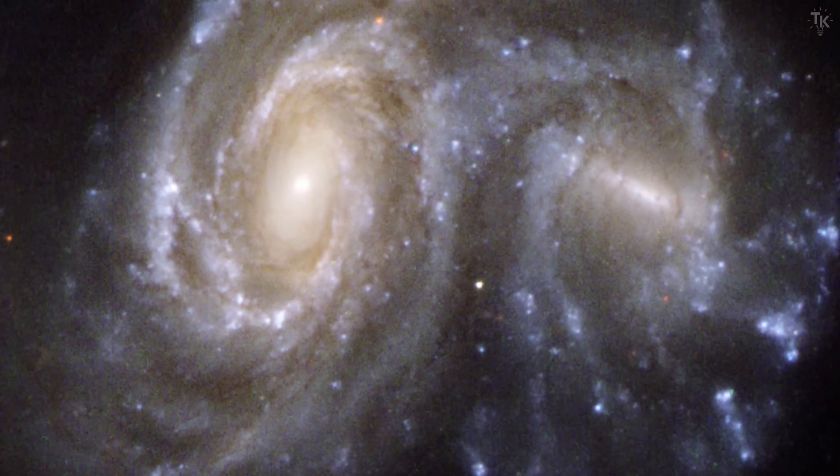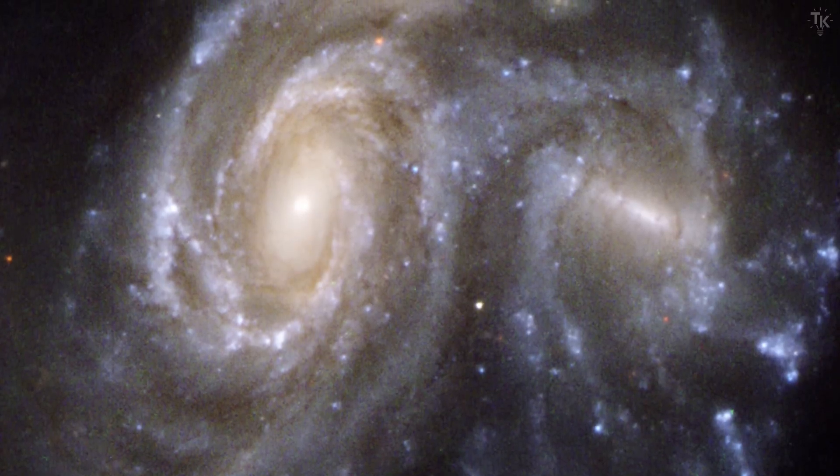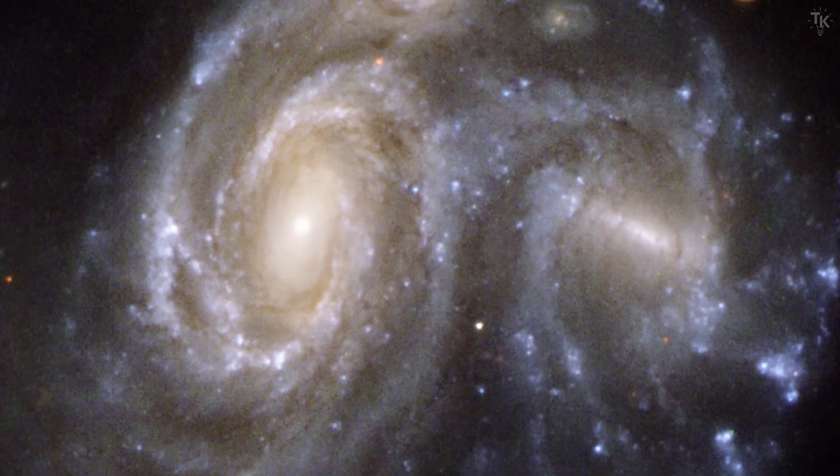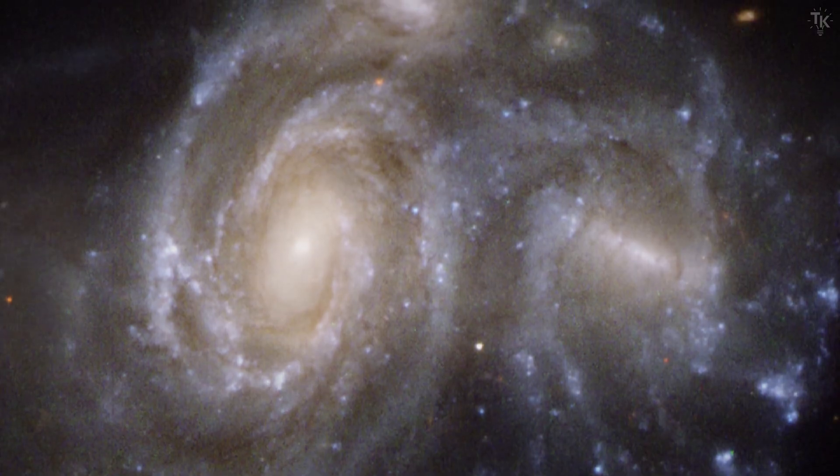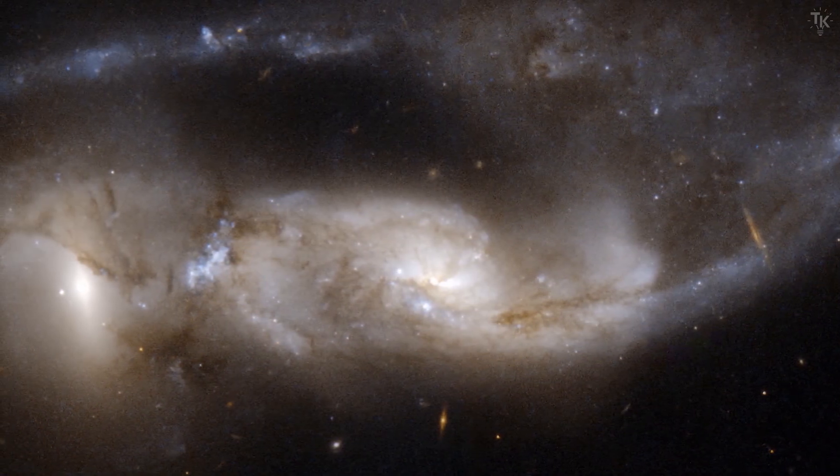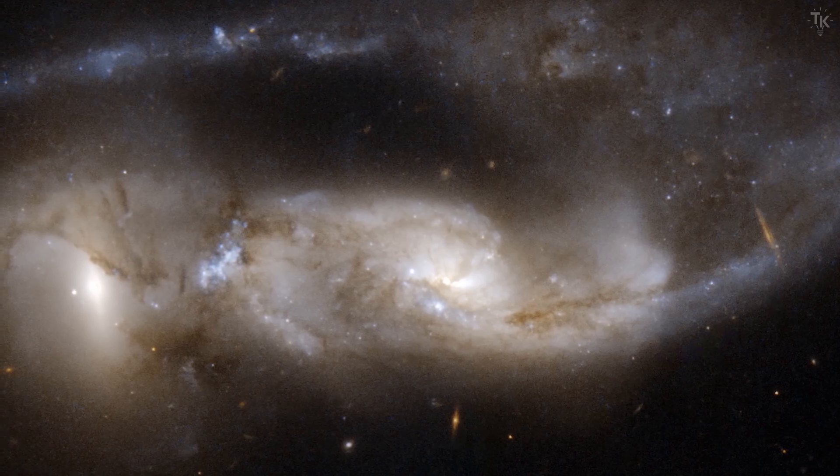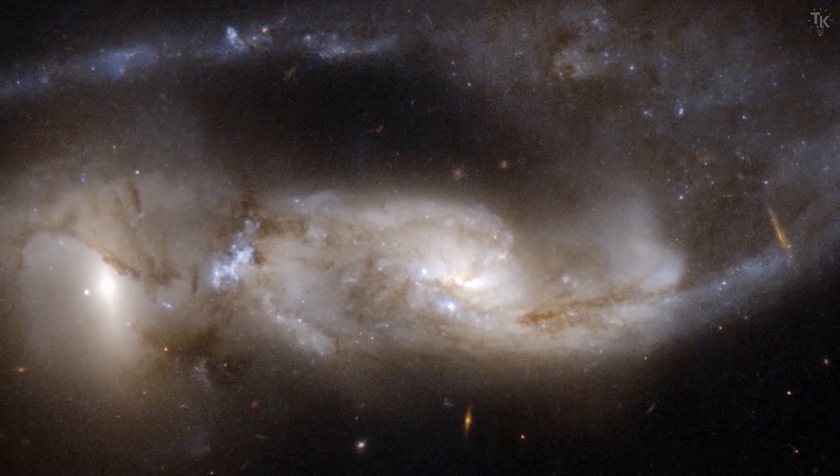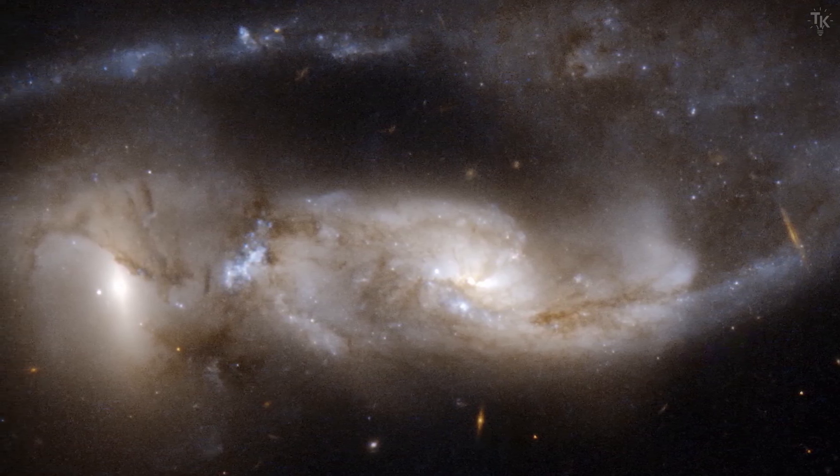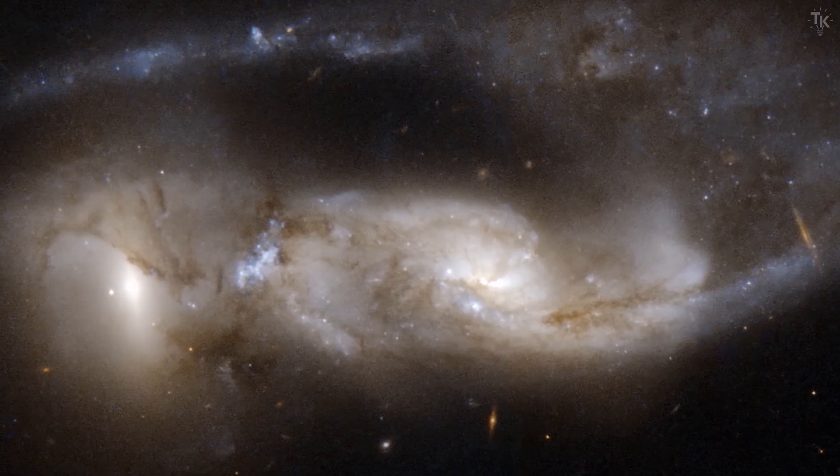Here, we see two spiral galaxies 450 million light years from Earth in the process of colliding. Similarly, this is another galaxy 300 million light years from Earth. As you can see, when galaxies collide, their shapes become severely distorted.